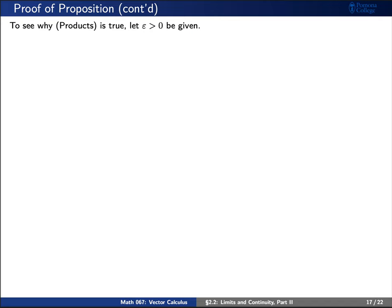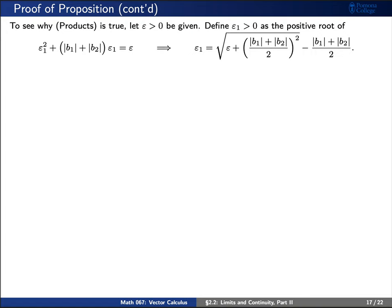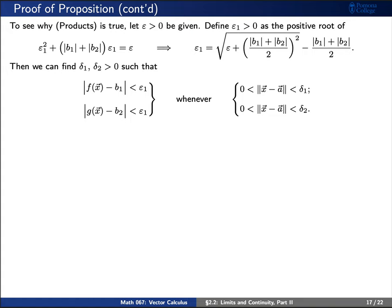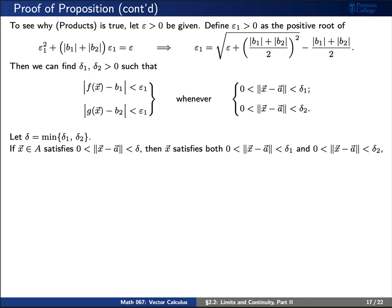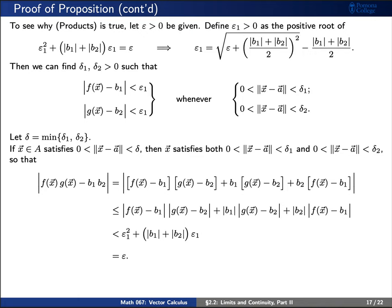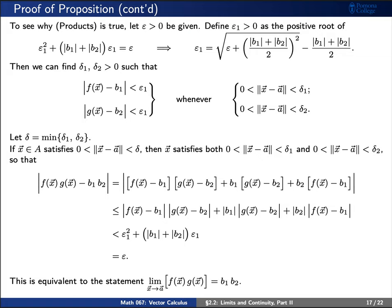We find a similar proof for products. If epsilon is given, define epsilon₁ as the positive root of a certain quadratic equation. Then, with f being epsilon₁ away from b₁ and g being epsilon₁ away from b₂, there exist delta₁ and delta₂ such that x can be forced close enough to a. Choosing delta smaller than both delta₁ and delta₂, and using a little algebra, we find that f times g is at most epsilon away from b₁ times b₂ — proving that the limit of the product is the product of the limits.